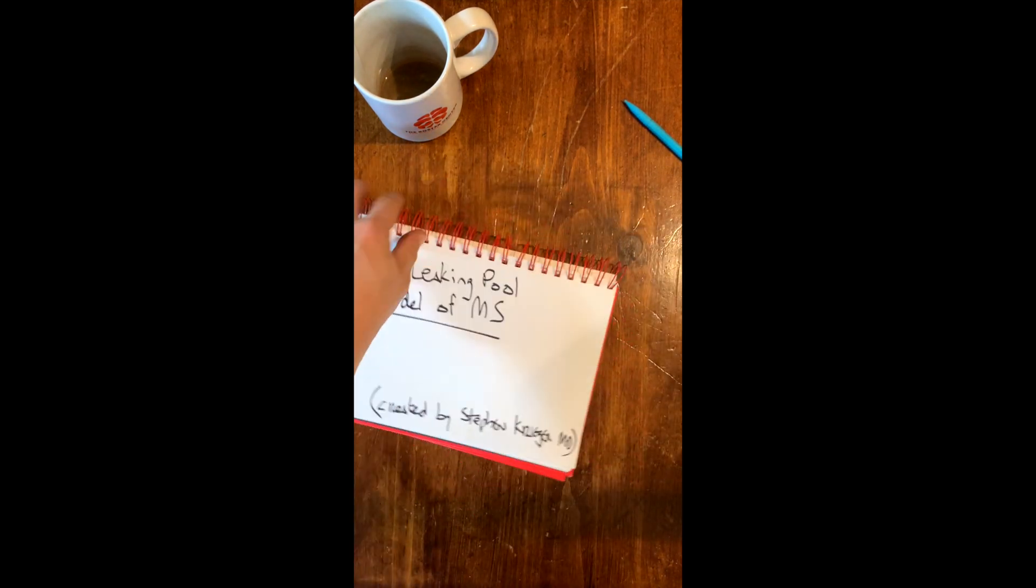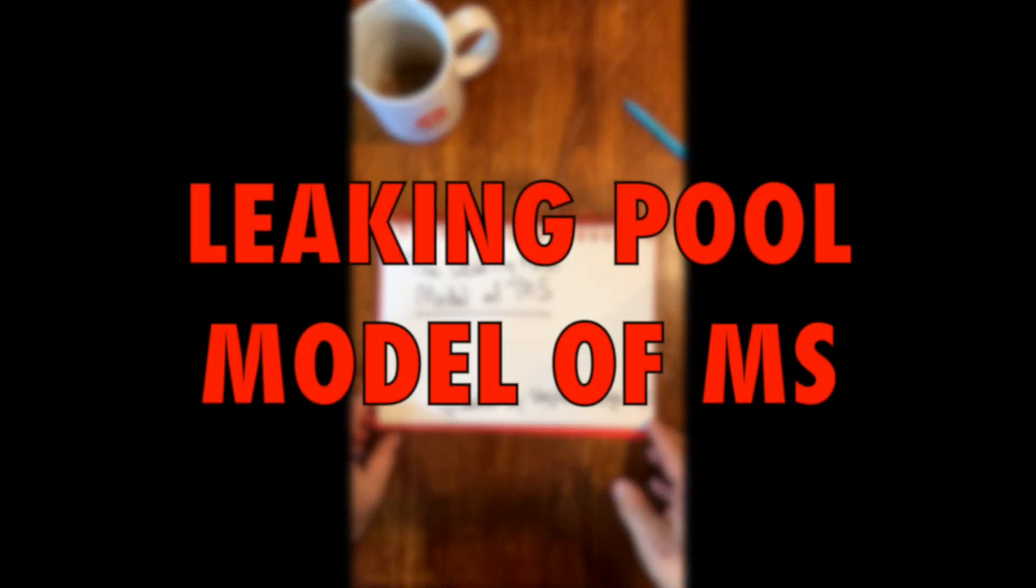Today I want to spend a few minutes and talk to you about my friend Steven Krieger's topographical model of MS, or as I like to refer to it, the leaking pool model of MS.